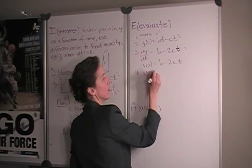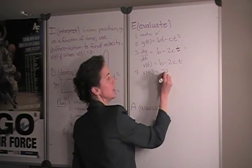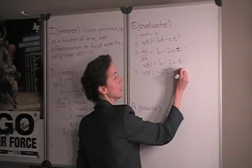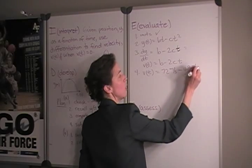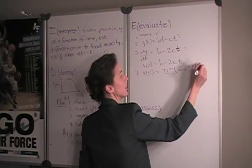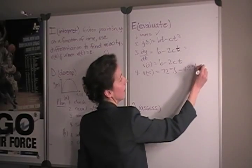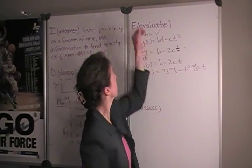So that we have 72 meters per second minus 4.9 meters per second squared times time. I forgot something, didn't I? I forgot that multiplier of 2.